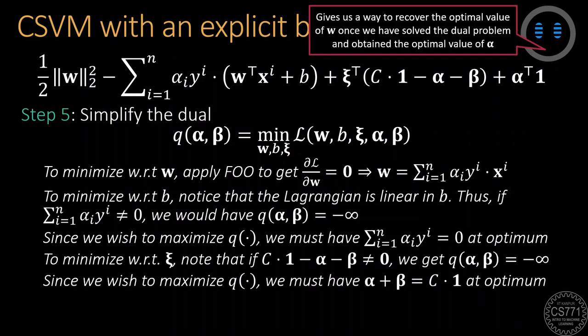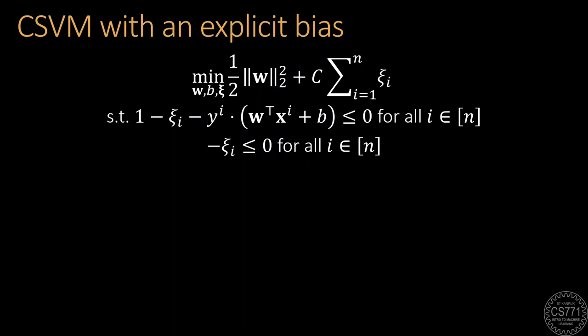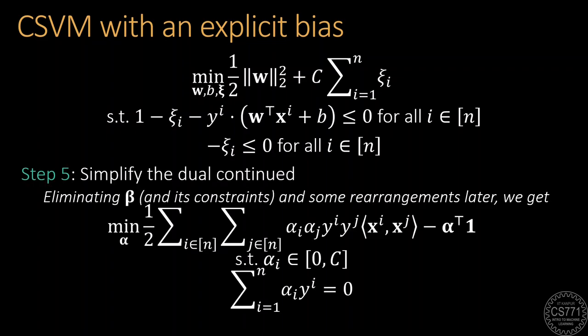A similar argument tells us that in order for the minimization with respect to xi to make sense, at the optimum, we must have alpha plus beta equals the all c vector. Putting all these relations into the Lagrangian and eliminating the dual variable beta, as we have seen before, gives us the simplified form of the dual with alpha as the only dual variable.